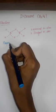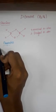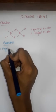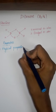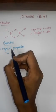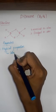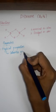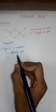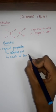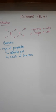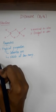Now, what are the properties of Diborane? First, we will discuss physical properties. Diborane is a colourless gas and it is stable at low temperature. These are the physical properties of Diborane. Then, chemical properties.